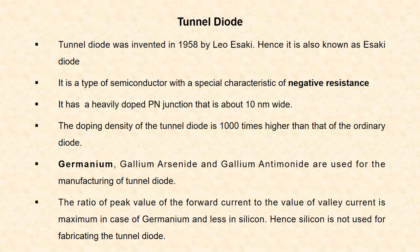The ratio of peak value of the forward current to the value of valley current is maximum in case of germanium and it is less in case of silicon. Hence, silicon is not used for the fabrication of tunnel diode.